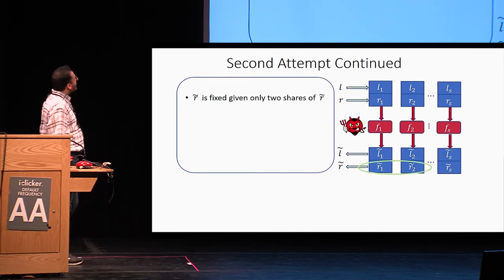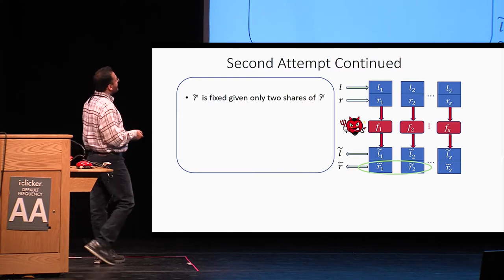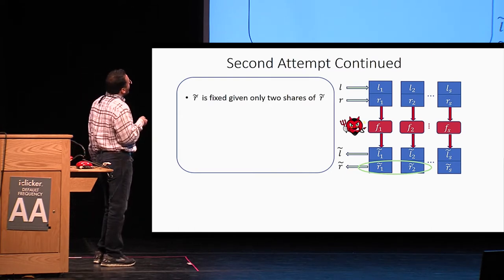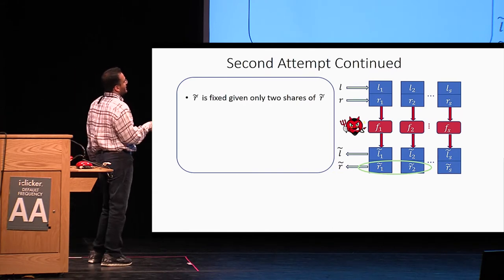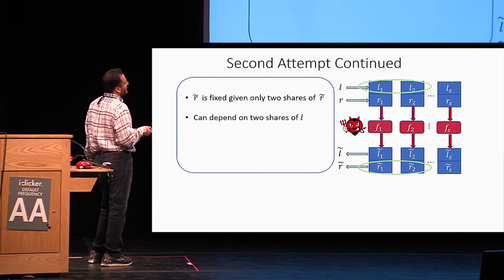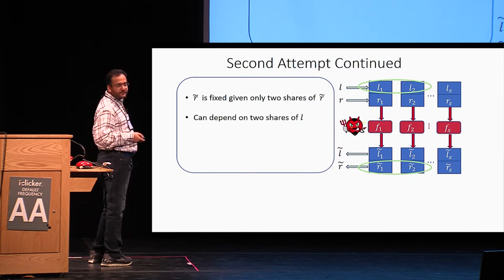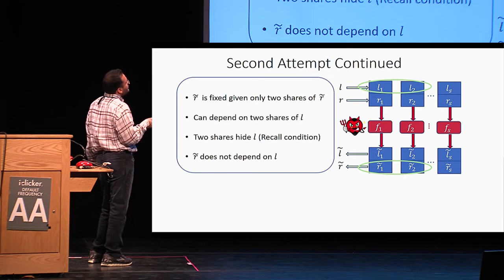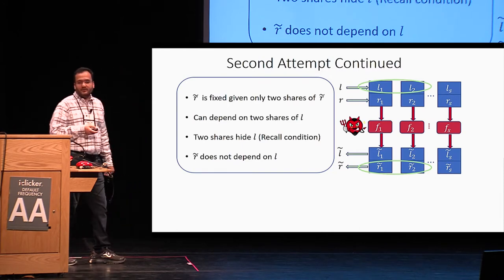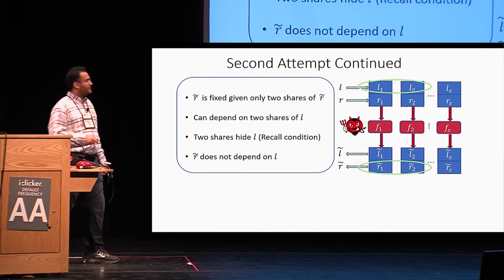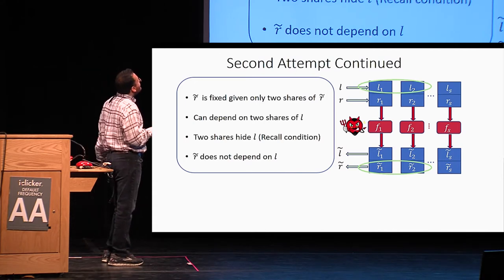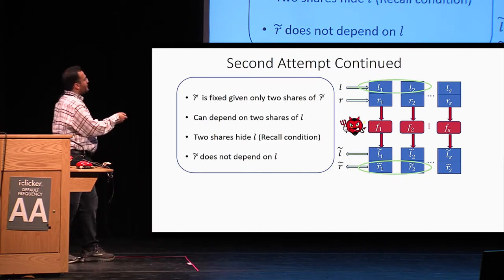This idea gets us pretty far. Looking at the tampered shares, one can argue that R-tilde is determined given any two of the tampered shares, because R is shared under a two-out-of-N scheme. Since we are in the individual tampering model, these two tampered shares can only depend on two shares of L. But two shares of L have no information about L at all, since L is shared under a T-out-of-N scheme with T at least three. So R-tilde does not depend on L — it only depends on R.